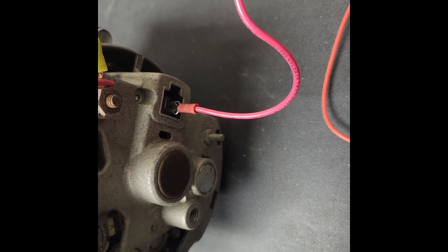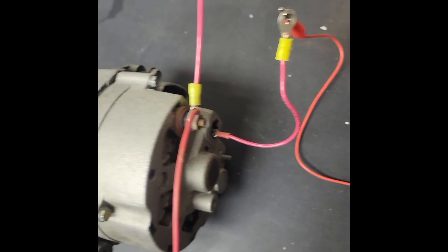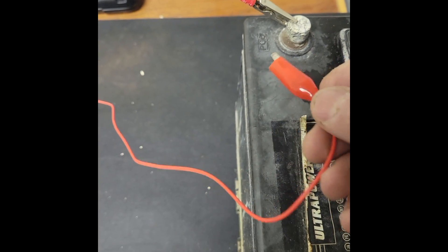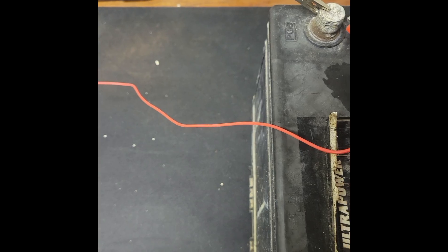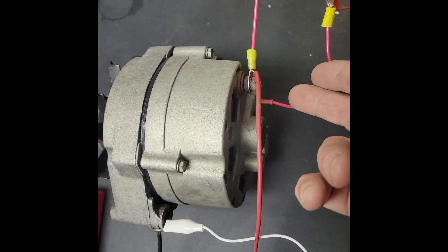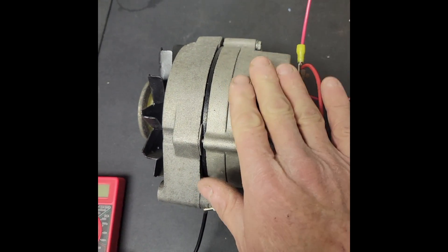On terminal 2, which is our field terminal on an externally regulated, we have this wire which is our exciter wire. When we start to spin it, we will touch this to the positive terminal. That will send juice into the field coil, which will create the magnetic field necessary for the alternator to work.